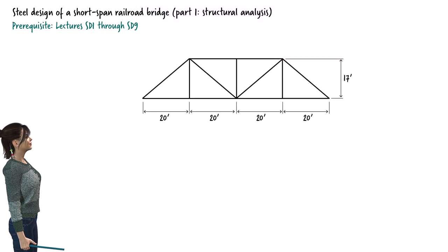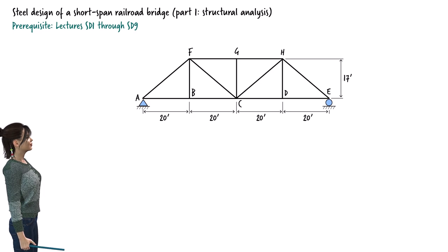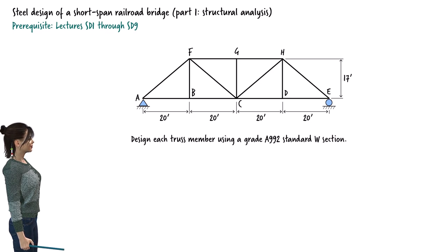Here is a two-dimensional drawing of the truss. Let's assume the truss is simply supported. I am going to label the truss nodes using letters A through H. Under the applied load, each truss member may be subjected to a compressive or tensile force. We wish to select a standard W-shaped section for each member that satisfies the relevant AISC design requirements.